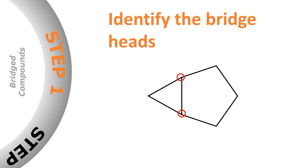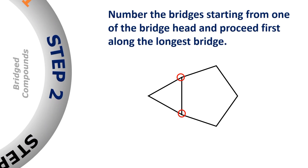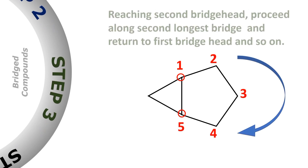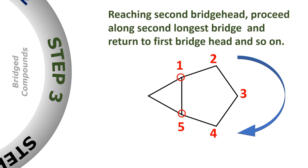Let's name a bicyclic molecule step by step. While naming a bicyclic compound, the first step is to identify the bridge heads. After identification of the bridge heads, the next step is the numbering of the bicyclic system. For that, we start numbering from one of the bridge heads and proceed along the longest bridge. Since the right bridge is the longest bridge, we will move in a clockwise direction.